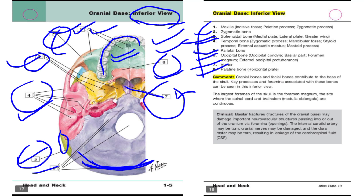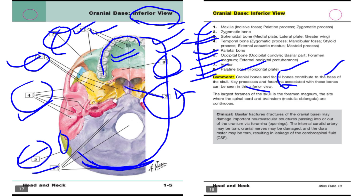Now we will discuss the comments. Cranial bones and facial bones contribute to the base of the skull — cranium has eight bones and the facial bones 14 bones contribute to the base of the skull. Key processes and foramina — foramina means openings — and key processes and foramina associated with these bones can be seen in the inferior view.